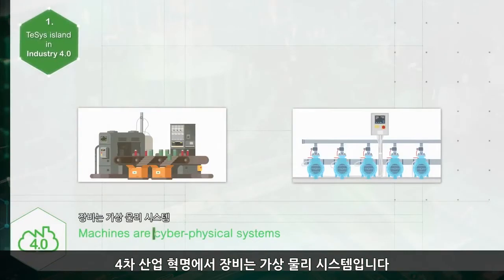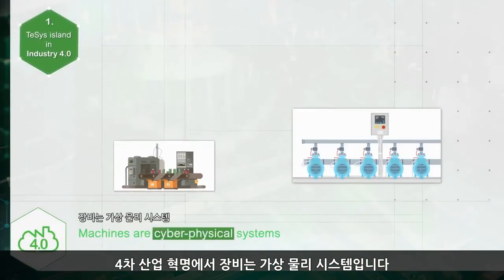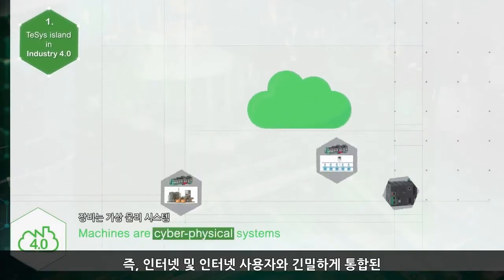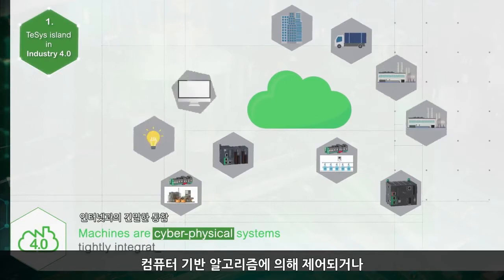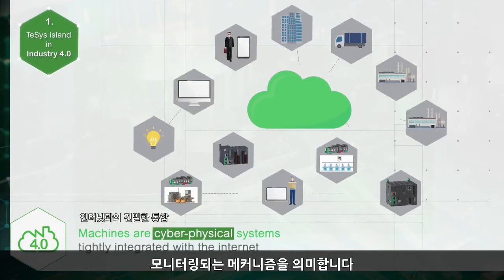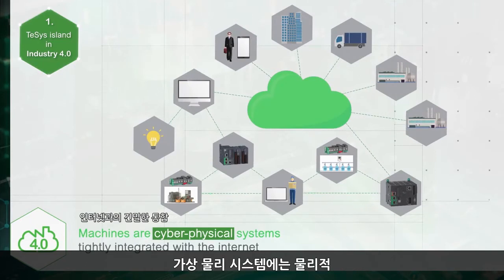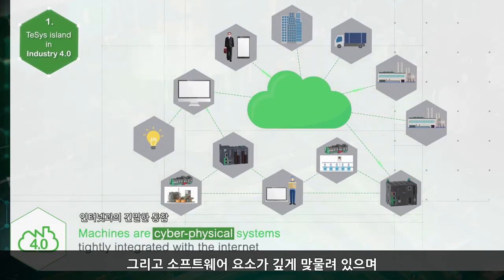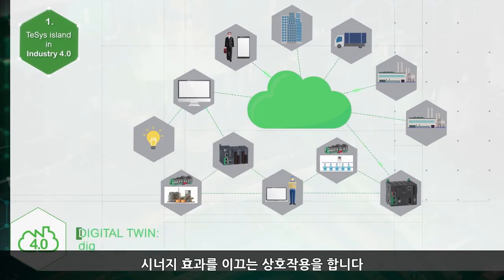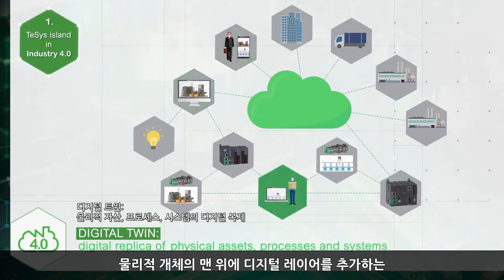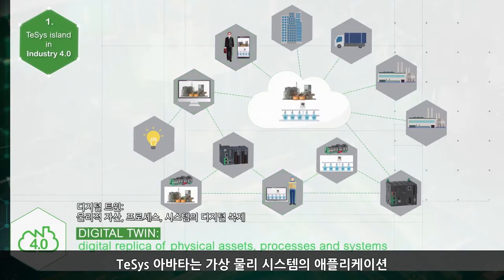In Industry 4.0, machines are cyber-physical systems — mechanisms controlled or monitored by computer-based algorithms, tightly integrated with the internet and its users. In cyber-physical systems, physical and software components are deeply intertwined, interacting with each other in a myriad of ways, adding a digital layer on top of the physical object.